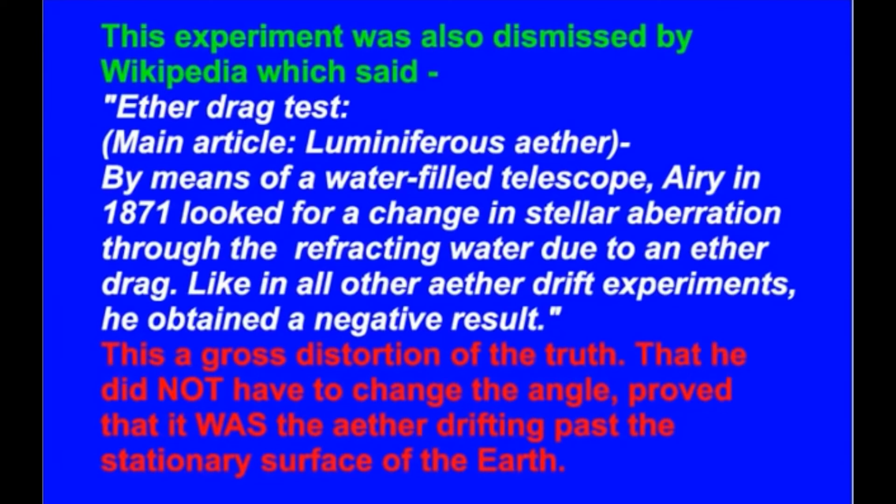This experiment was also dismissed by Wikipedia, which said, Ether drag test, under the main article, Luminiferous Ether. By means of a water-filled telescope, Airy, in 1871, looked for a change in stellar aberration through the refracting water due to an ether drag. Like in all other ether drift experiments, he obtained a negative result. This is a gross distortion of the truth. That he did not have to change the angle proved that it was the ether drifting past the stationary surface of the Earth.